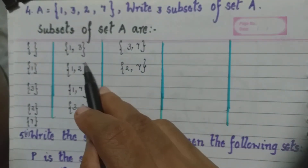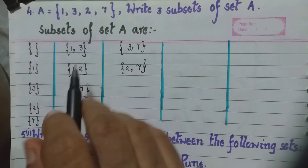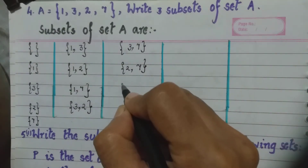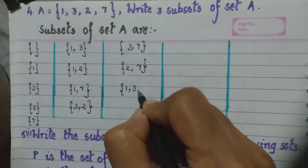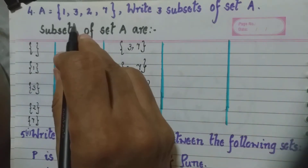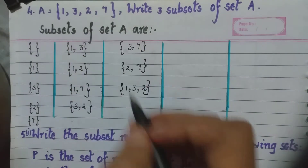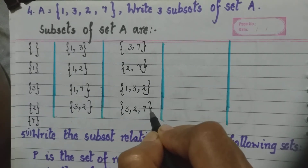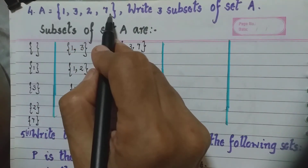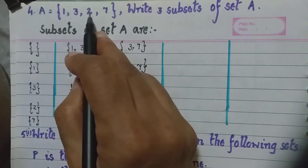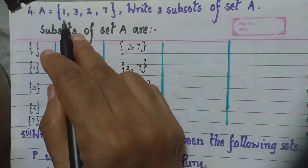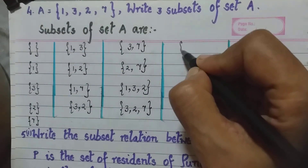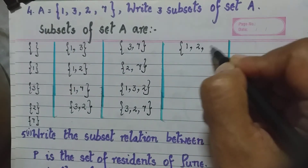Now we'll take three elements at a time. That is {1, 3, 2}. Then we take {3, 2, 7}. Then we take {2, 7, 1} — but since 1 is first in set A, I will write it as {1, 2, 7}.